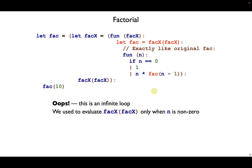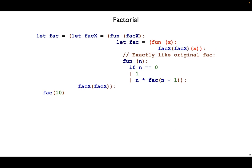What used to happen was our self-application was down below inside the if statement, and that way it got delayed — it would only get called when we needed it. Now when it's up on top, it gets called all the time and so this goes into an infinite loop. We can fix that by delaying, and we can delay with a lambda. With this one extra layer of indirection, now we have code on the inside that looks exactly like our original factorial.